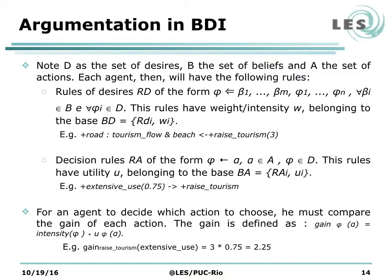The architecture proposed in the Simpark game to deal with argumentation in software agents is as follows. Let D be the set of desires, B the set of beliefs, and A the set of actions. Each agent will have the following rules in their belief base. Rules of desire are of the form: desires and beliefs implicating a desire — in other words, if the agent has beliefs β1 to βm and desires φ1 to φn, then desire φ is satisfied. These rules have intensity w. An example in the context of Simpark is: if the agent believes the park area has a road, a tourism flow, and a beach, then the agent will have the desire of raising tourism, with weight 3.